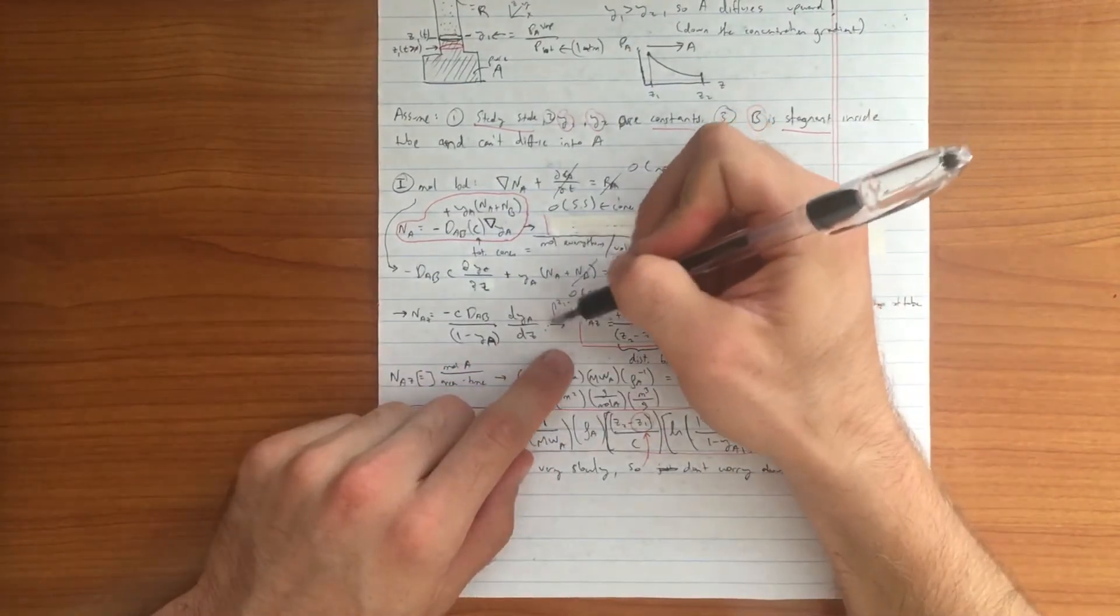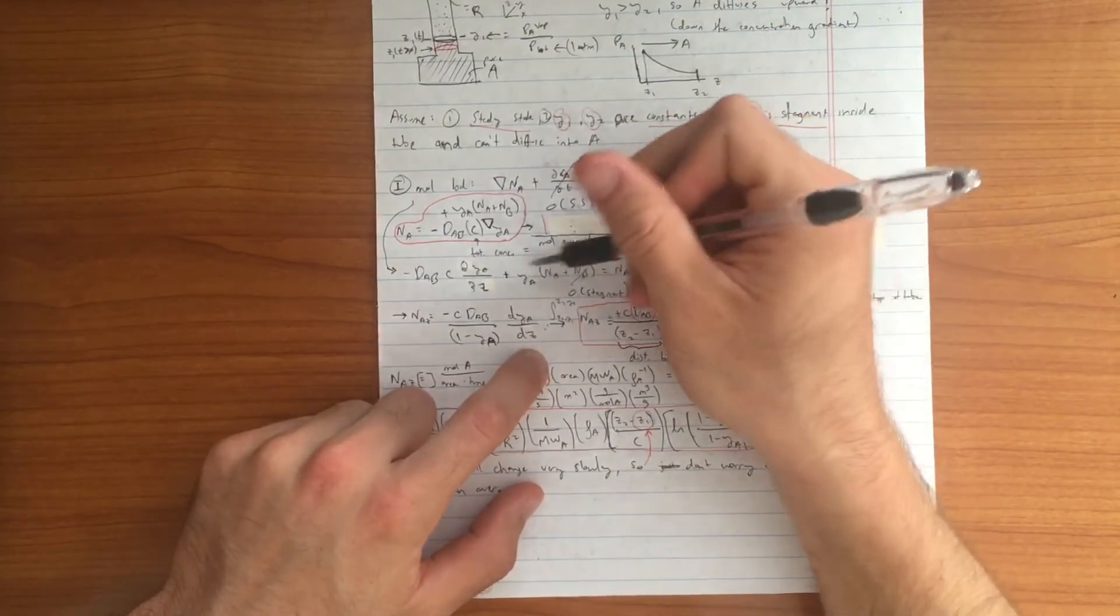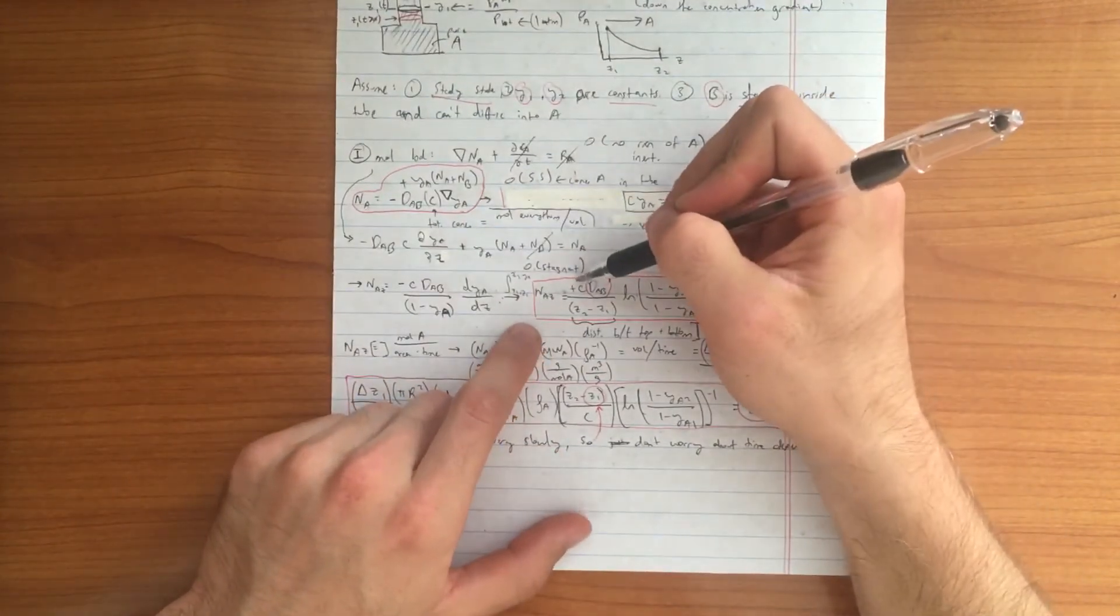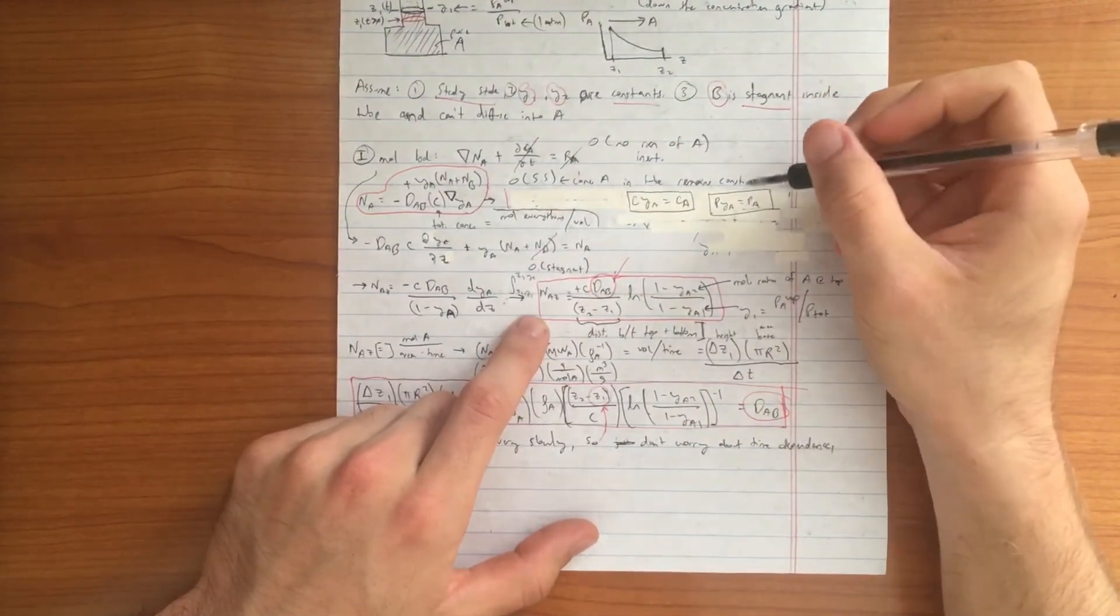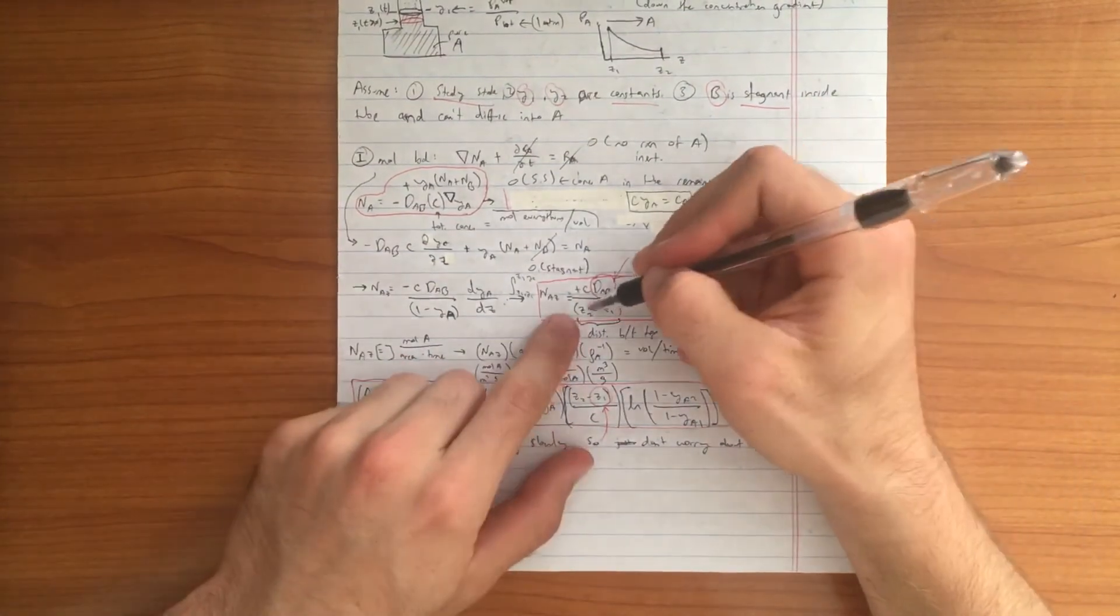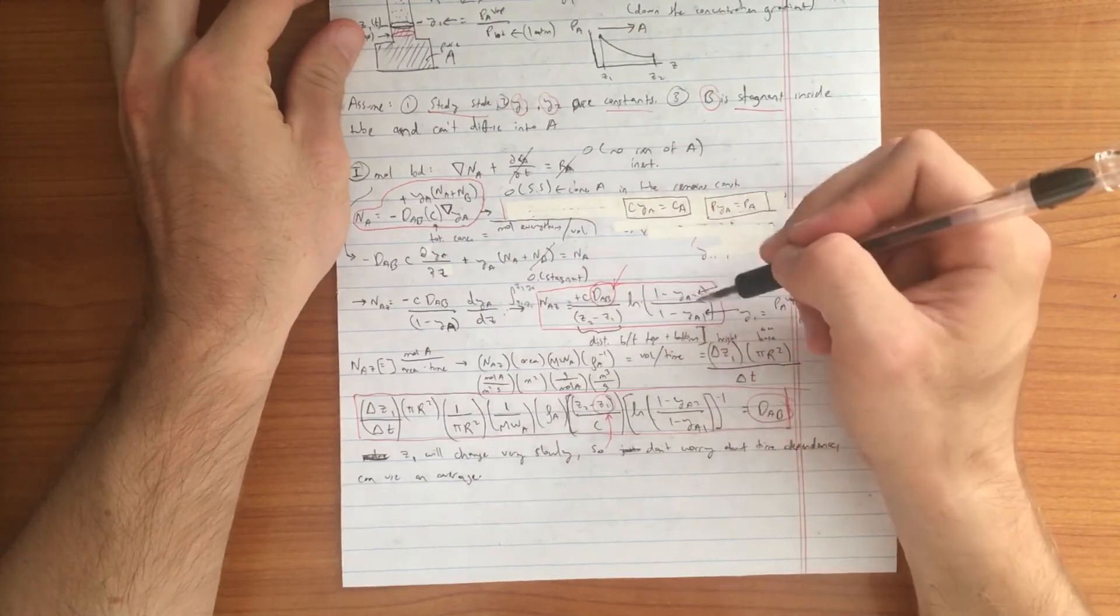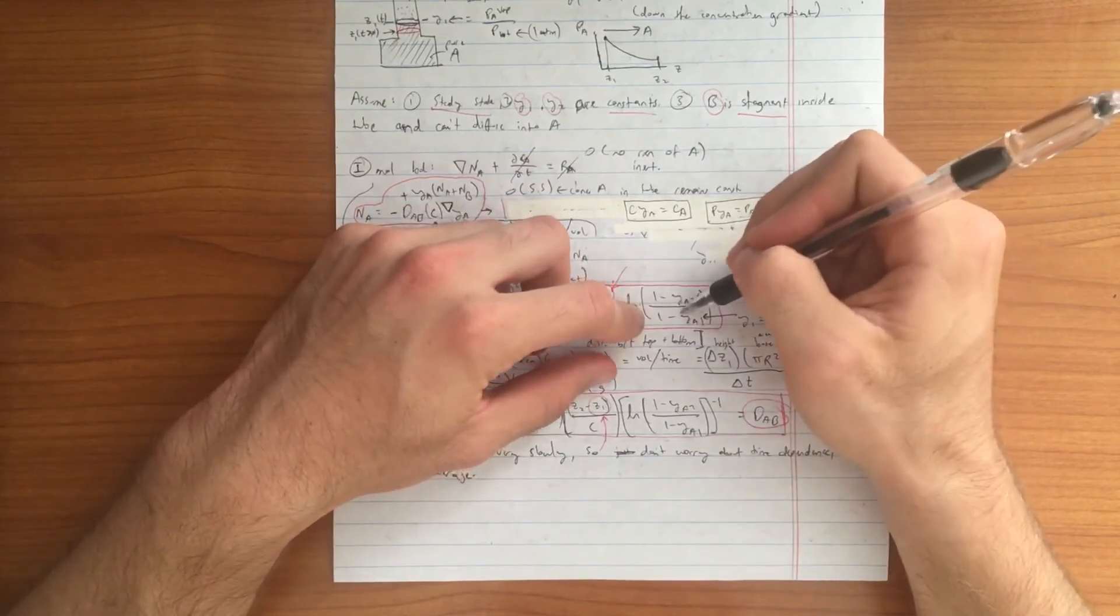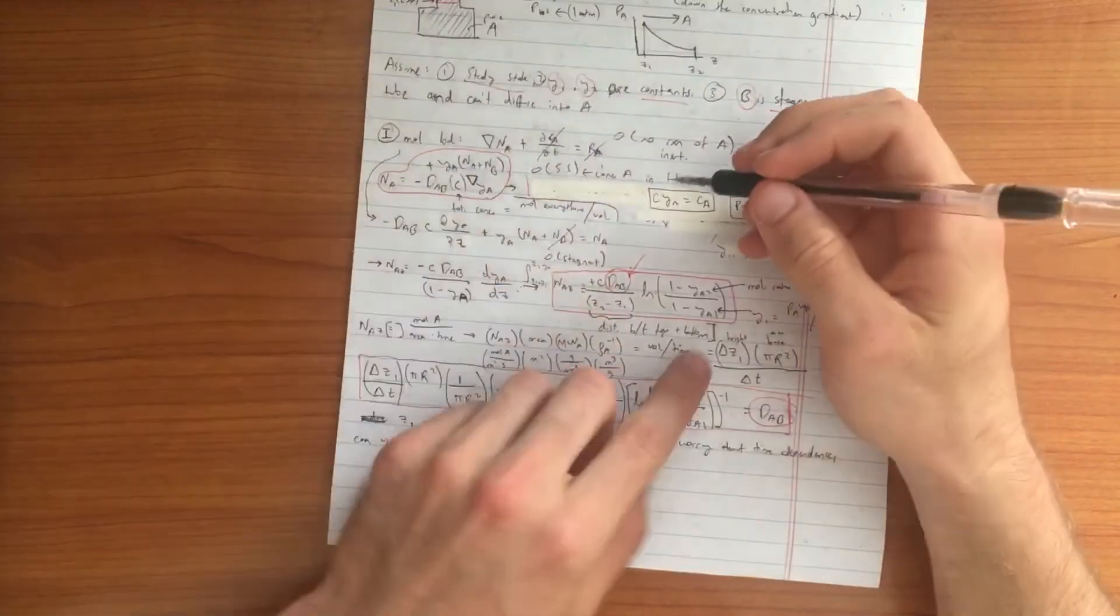The next step is to integrate this function from Z1 to Z2 with respect to Z and from Y1 to Y2 with respect to YA. We end up finding for our Arnold cell in this example ends up being this equation. DAB is right here, which is what we want to solve for. Z2 minus Z1 is the height of the control volume that we are interested in. We've gone over what YA1 and YA2 were. So you can measure these pretty easily.